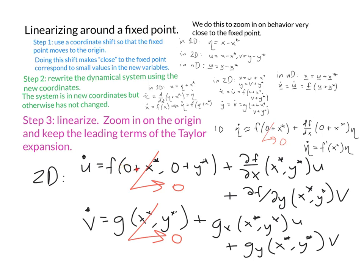Again, at (u,v) = (0,0), we're right at the fixed point, and f at that point is zero and g at that point is zero. So we're able to simplify this expression to include only these first derivative terms.